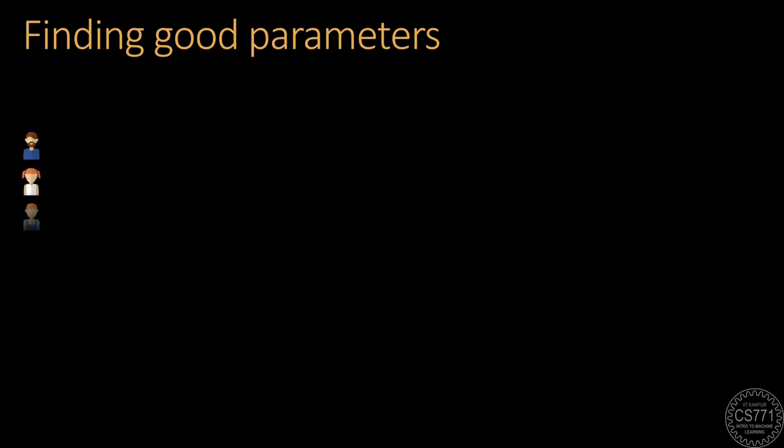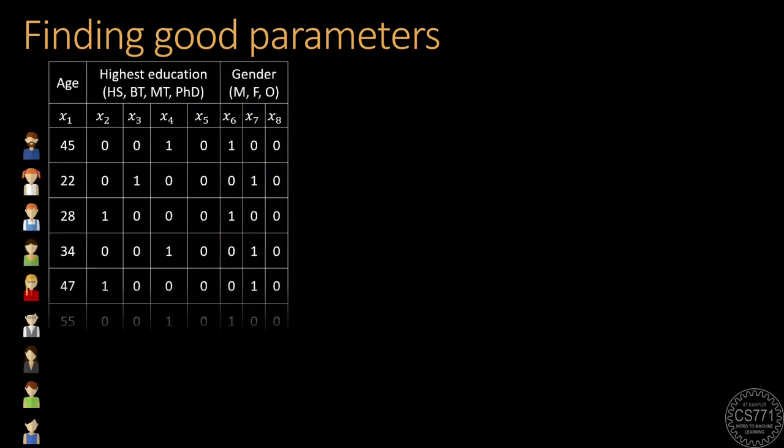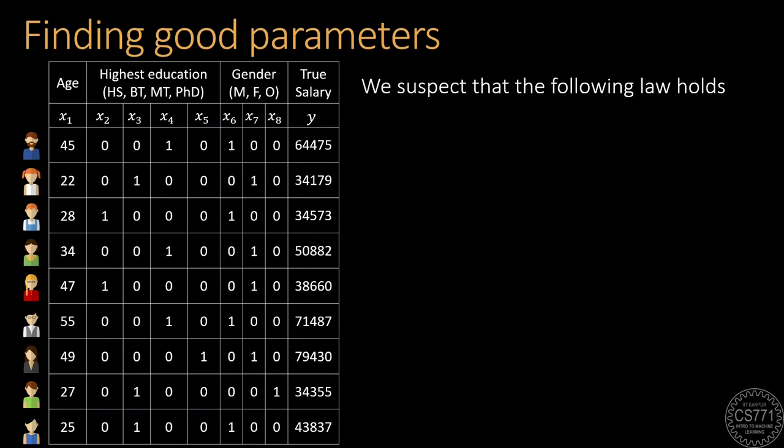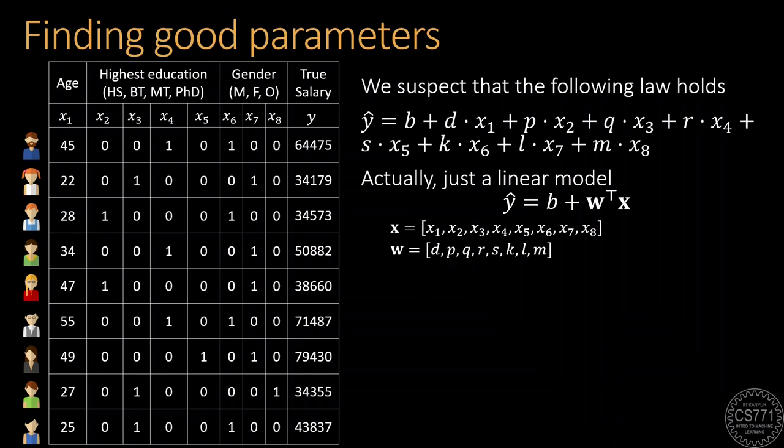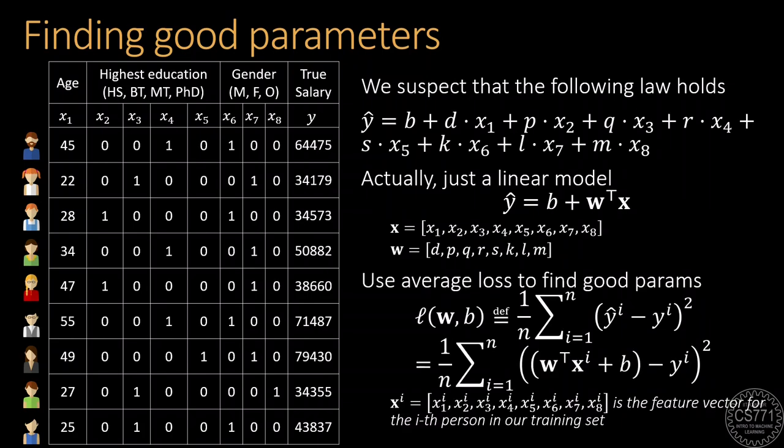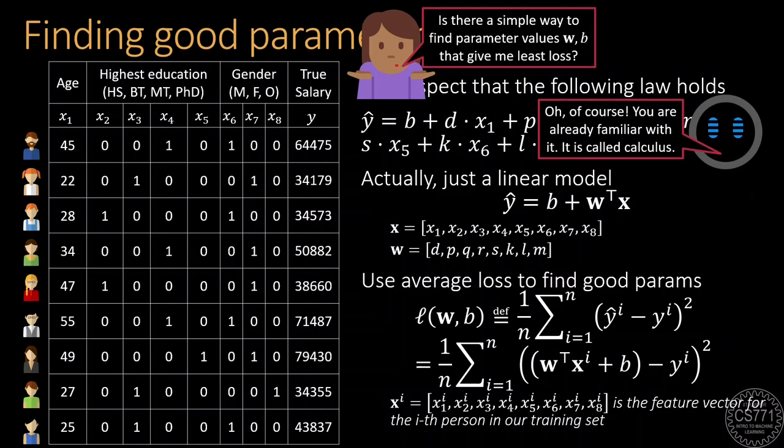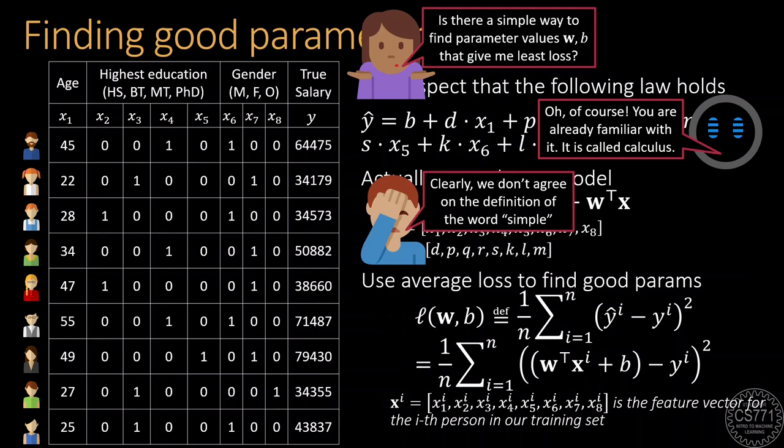In a previous discussion, we saw how we can use a linear model to predict the salary of an individual given their age, educational qualifications, and gender as feature values. We also saw how we can use a loss function to search for the best parameter values for this model that could accurately predict the salaries. Calculus is one of the key techniques at the heart of most machine learning algorithms that perform loss minimization, and today we will revisit our calculus basics in a simple and intuitive manner.